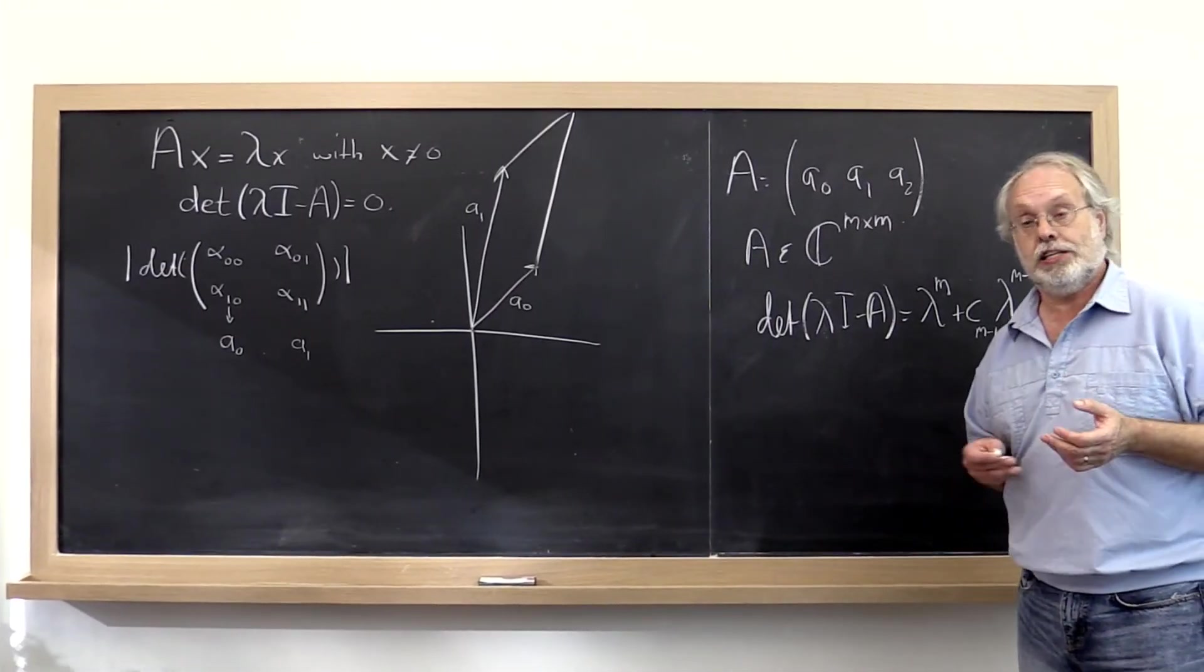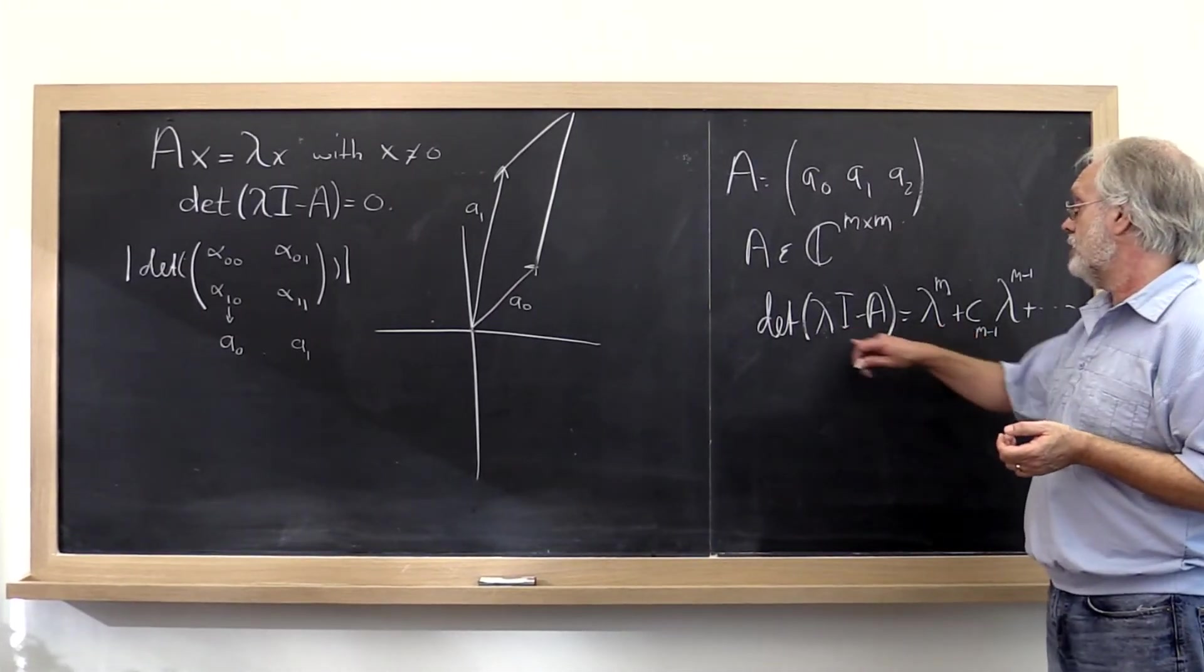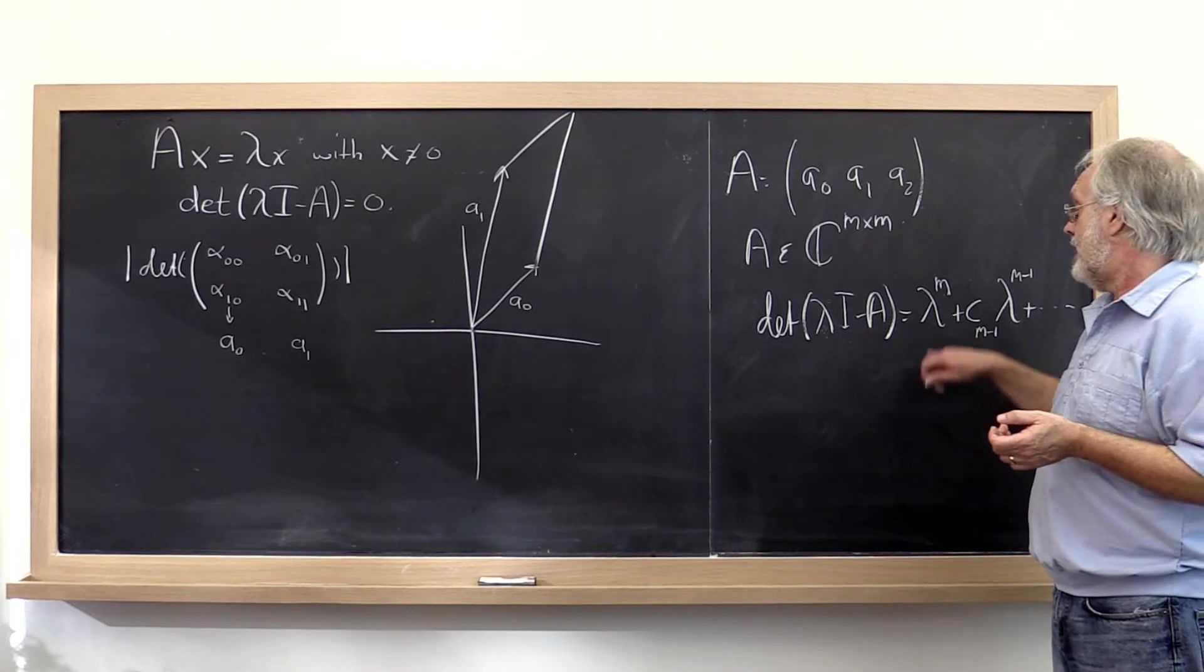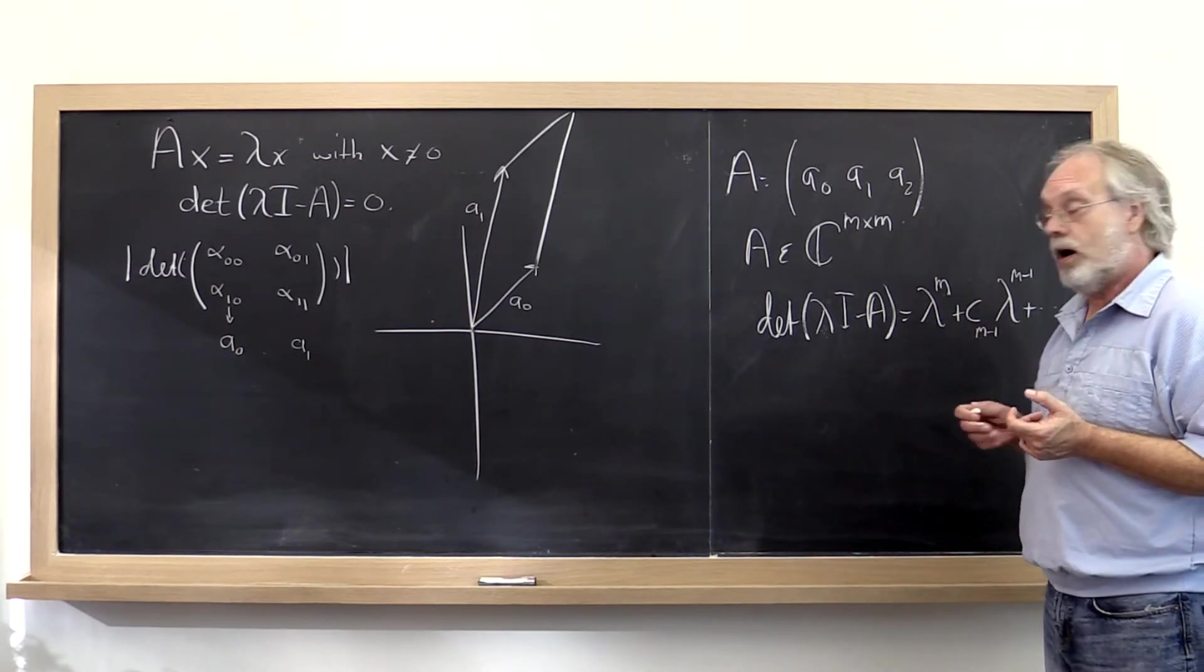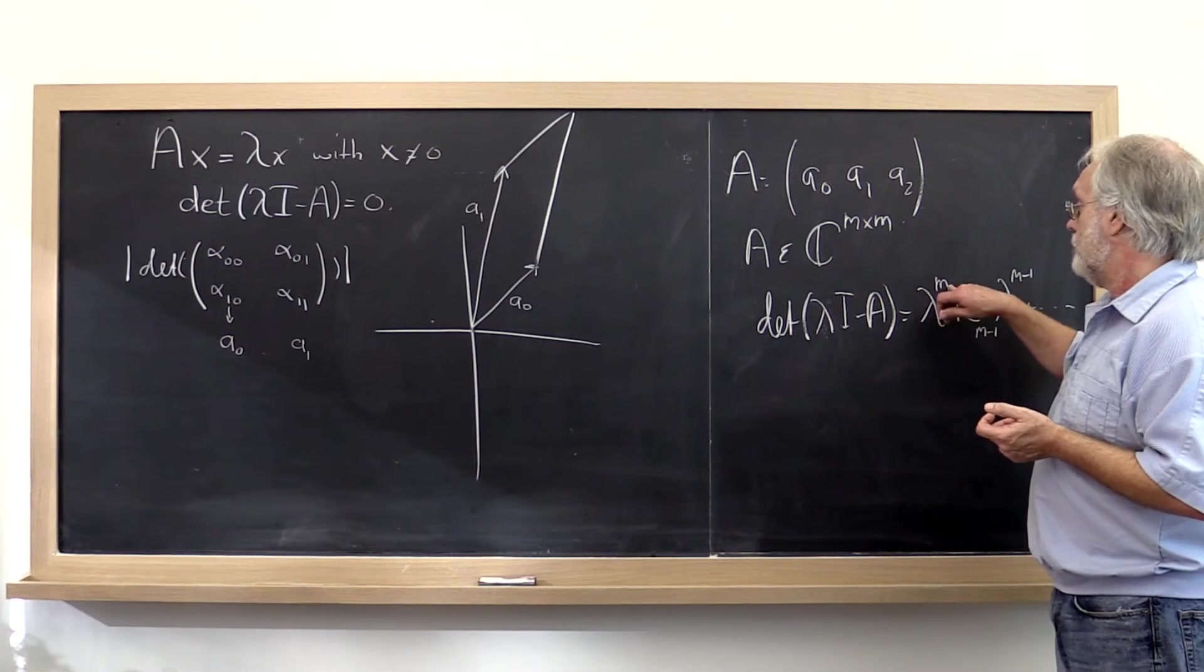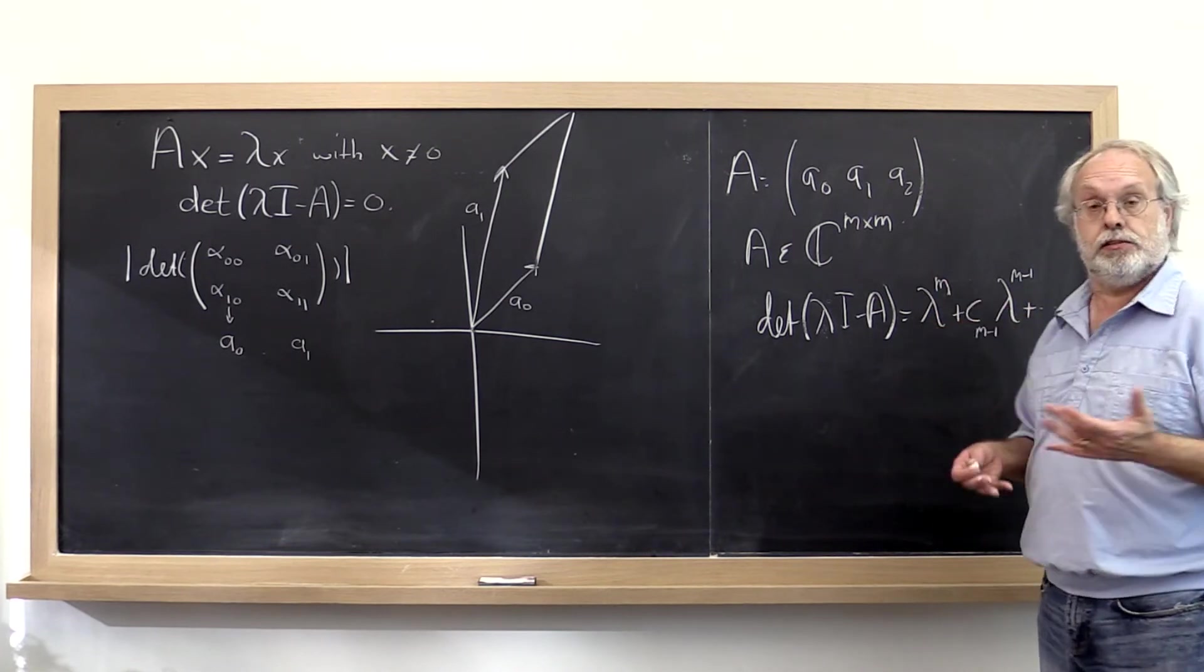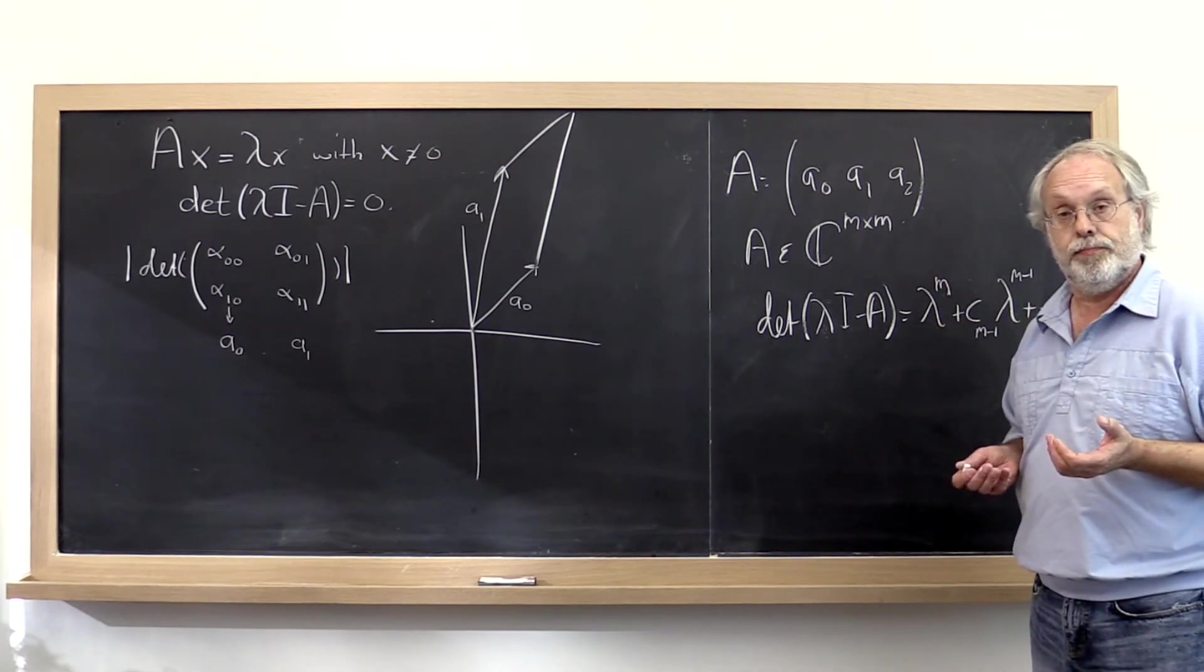Now this tells us all kinds of interesting things. In particular, it tells us that a matrix A has at least one eigenvalue. Why? Because an mth degree polynomial has at least one root.